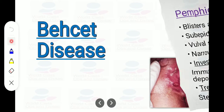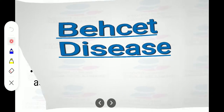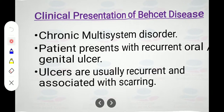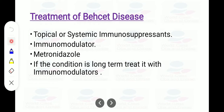Pemphigoid presents as blisters and erosions in the vulval area — sub-epidermal blisters with vulval scarring and narrowing of the introitus. Immunofluorescence studies on biopsy show antibody deposits at the dermo-epidermal junction. Treatment is systemic steroids. Behçet's disease is a chronic multi-systemic disorder presenting with recurrent oral ulcers and genital ulcers associated with scarring. Treatment is by topical or systemic immunosuppressants, modulators, or metronidazole; long-term disease requires immunomodulators.